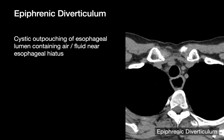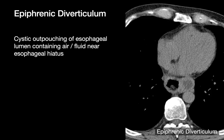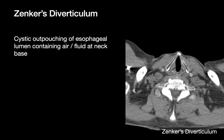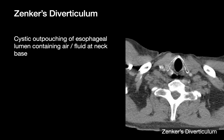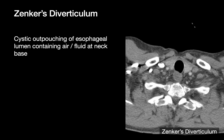Epiphrenic diverticula are focal outpouchings from the lower esophagus near the esophageal hiatus. Zenker's diverticula are small focal outpouchings from the upper esophagus near the neck base. In this image, the yellow arrow points to the collapsed esophagus and the pink arrow points to an air-filled Zenker's diverticulum.